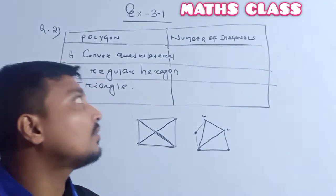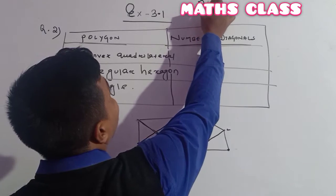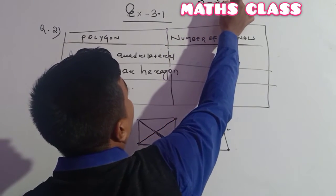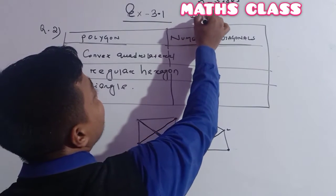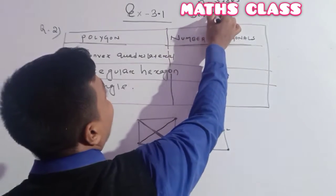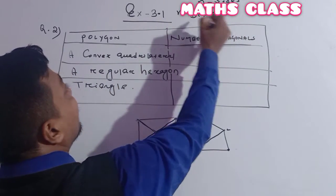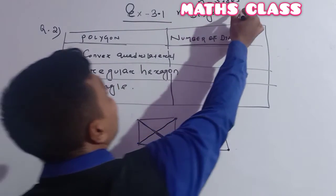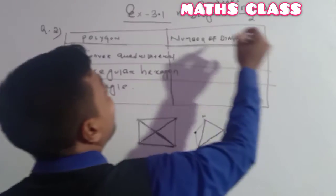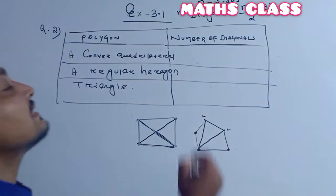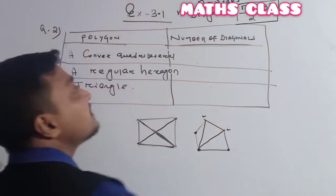How to find out the number of diagonals a polygon has? Suppose a polygon has n sides. The diagonal formula is: number of diagonals = n(n−3) / 2. Remember this formula — n(n−3) / 2, where n means the number of sides.